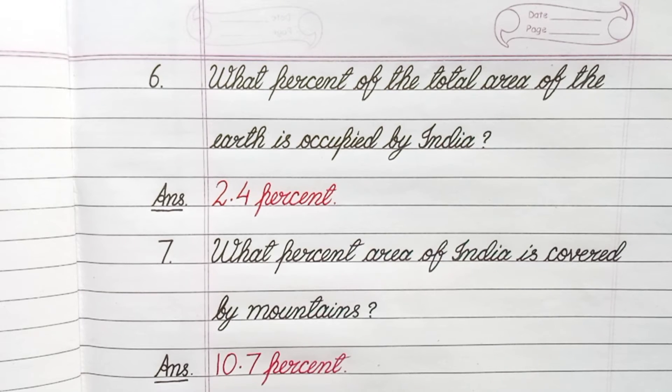Question number 7: What percent area of India is covered by mountains? Answer: 10.7 percent.